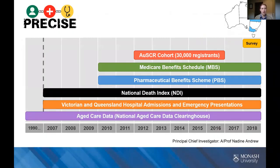This brings me to the Precise Project, which was a large data linkage study linking information from a cohort of OSCA registrants located in Victoria and Queensland. We linked information from these registrants with routinely collected data from the Medicare Benefits Schedule, the Pharmaceutical Benefits Scheme, the National Death Index, hospital admissions and emergency presentations in both states, and also the National Aged Care Data Clearinghouse. For a subset of patients admitted in 2016, we also conducted a cross-sectional survey to understand their patterns of treatment and care after stroke, which was also linked with these routinely collected data sources.